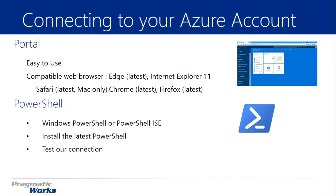The first thing we're going to talk about is connecting to our Azure account. We have two ways: the portal and PowerShell. The portal is really easy to use — all you need is a compatible web browser. The listed browsers are Internet Explorer, Safari, Chrome, and Firefox. I use Chrome a lot. They always state the latest version to ensure you have the latest security patches and that all components will work. For PowerShell, we need Windows PowerShell or PowerShell ISE.